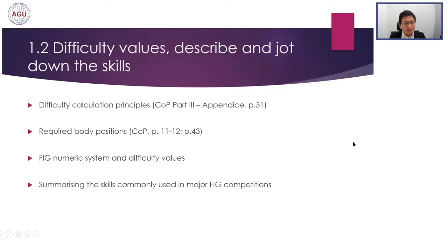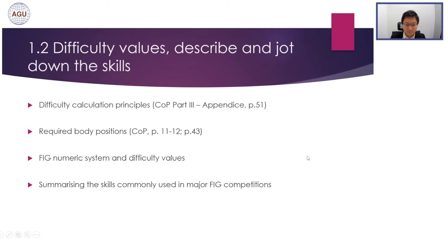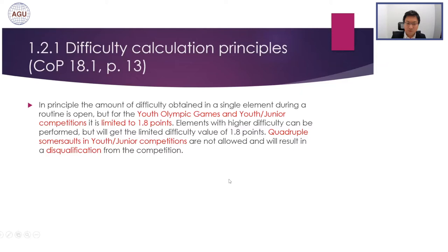As a difficulty judge, we need to learn how to describe the skills and record them in competition. I will talk about difficulty calculation principles, required body positions, the FIG numeric system, difficulty values, and summarize the skills commonly used in major FIG competitions. The amount of difficulty obtained in a single element during a routine is open, especially in senior competition. In junior competitions, there are some restrictions — for safety, they don't encourage junior athletes to perform very difficult skills, as it may cause potential injury.